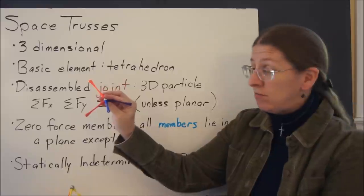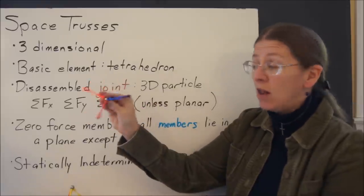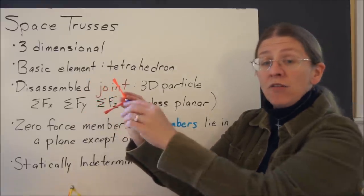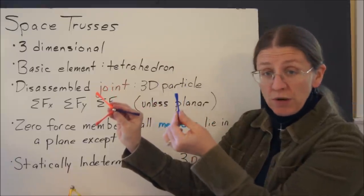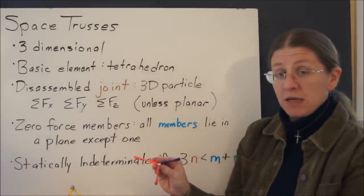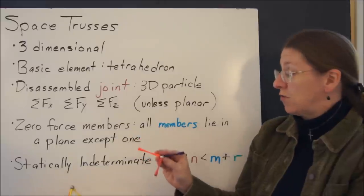If you sum the forces in that perpendicular to the plane where all of the other members are, then you get this one equals zero. So that's what makes up a three-dimensional zero-force member.